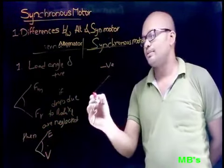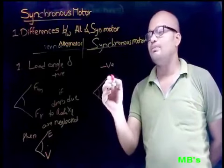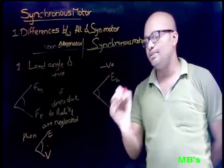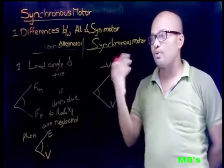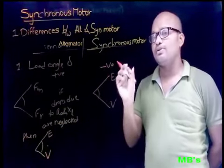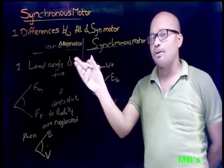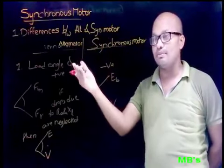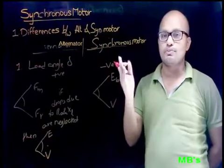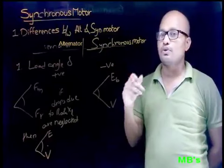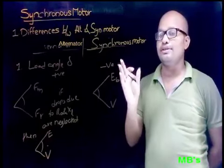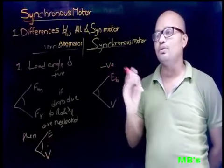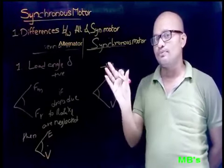In the case of synchronous motor, delta is the angle between back EMF EB and input voltage V. For a particular range of delta, operation of the alternator will be stable, and beyond that value of delta, the alternator operation becomes unstable. For the synchronous motor, if load increases it will run at synchronous speed up to a particular value of load angle, and beyond that value the synchronous motor simply stops running.